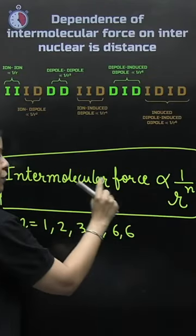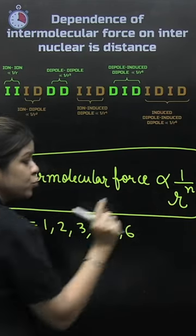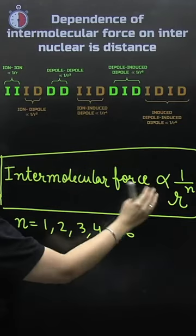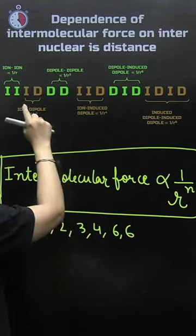First of all, you can see that intermolecular force is inversely proportional to r raised to the power n. Remember that n value is 1, 2, 3, 4, 6, 6. How do we know which type of intermolecular force is related to the distance? That's why you have a sequence. This is how easy.